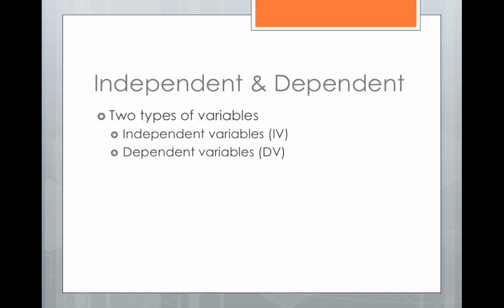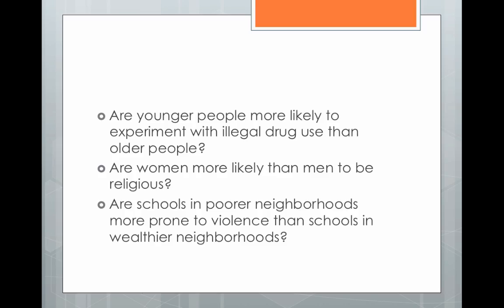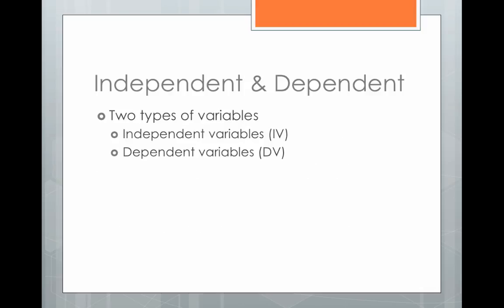Let's go into independent and dependent variables in more depth. We have two types of variables — things that can vary or change from unit to unit in our research. Independent variables are those that stand alone; they come first in your research, or they are the variables we say have an effect on something else. A dependent variable depends on the independent variable — it is the one being affected. The independent variable comes first and has some effect on the dependent variable.